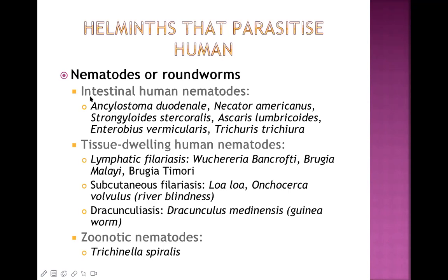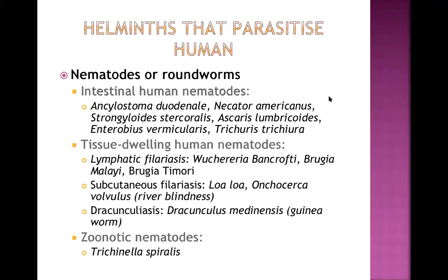Among the nematodes or roundworms, we have intestinal human nematodes, tissue-dwelling human nematodes, and zoonotic nematodes. Among the intestinal human nematodes we have Ancylostoma duodenale and Necator americanus, both known as hookworms. Strongyloides stercoralis is another one. Ascaris lumbricoides is called the giant roundworm because it is the longest of them all. Enterobius vermicularis is called the pinworm, a very small-sized intestinal nematode which causes itching near the anal region.